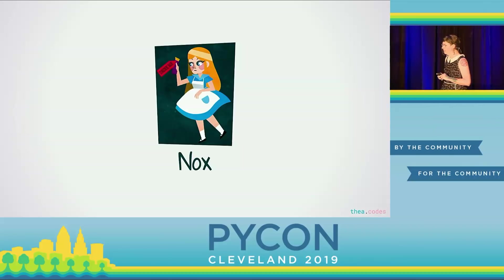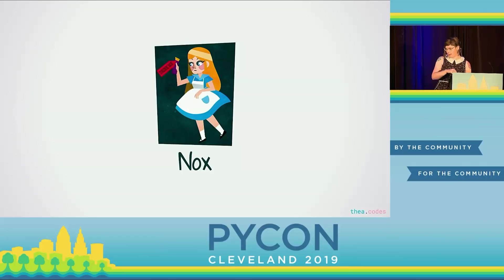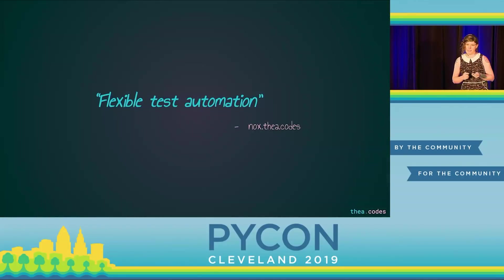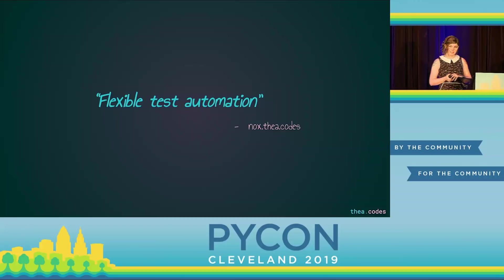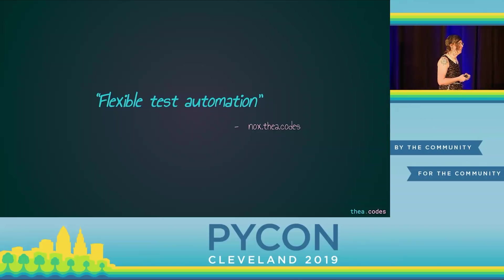So Tox is wonderful, but what if you want to do more? What if your automation needs to deal with all kinds of stuff? The next tool I want to talk about is Nox. I know it sounds really similar — it definitely wasn't intentional. Full disclosure: I am the original creator of Nox, but I love both Tox and Nox and the last tool I'm going to talk about too. Nox aims for flexible test automation. It is a spiritual sibling to Tox — they're sort of intended to solve similar problems. Like Tox, it uses a configuration file, but unlike Tox, its configuration file is Python.